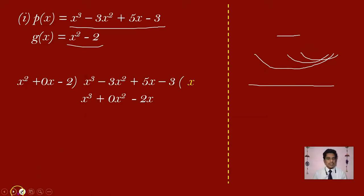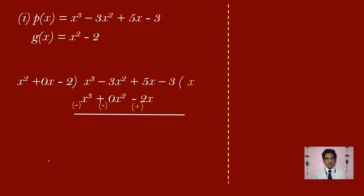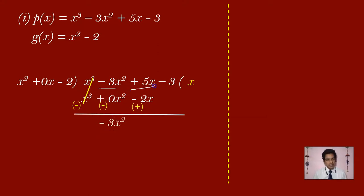Now you have to do the subtraction part. x cube minus x cube gets cancelled, giving 0. This is minus 3 and 0, so minus 3x square remains. Then plus 5x and plus 2x — wait, minus 2 gives plus 2x — so plus 5x plus 2x gives plus 7x. Now carry minus 3.